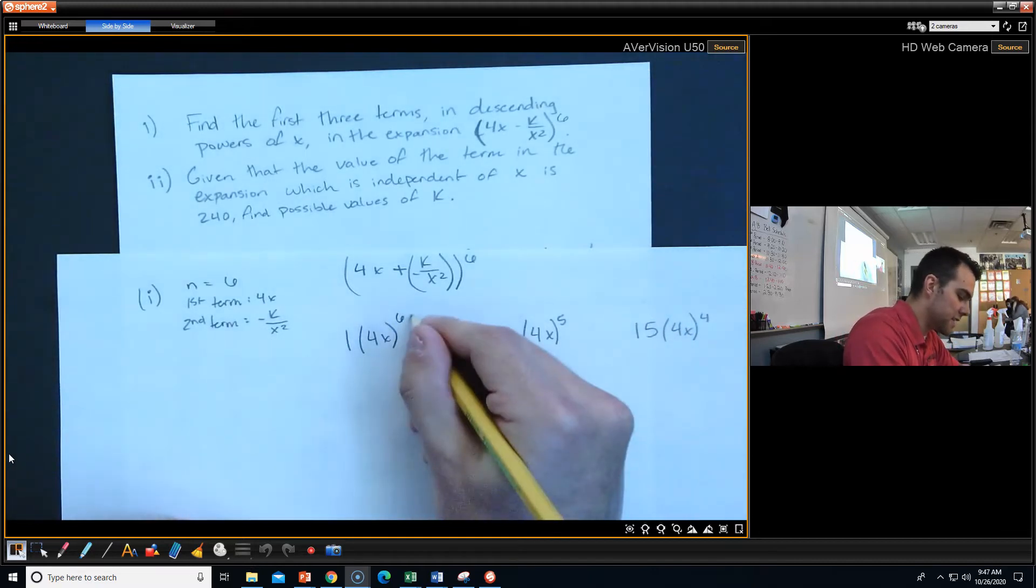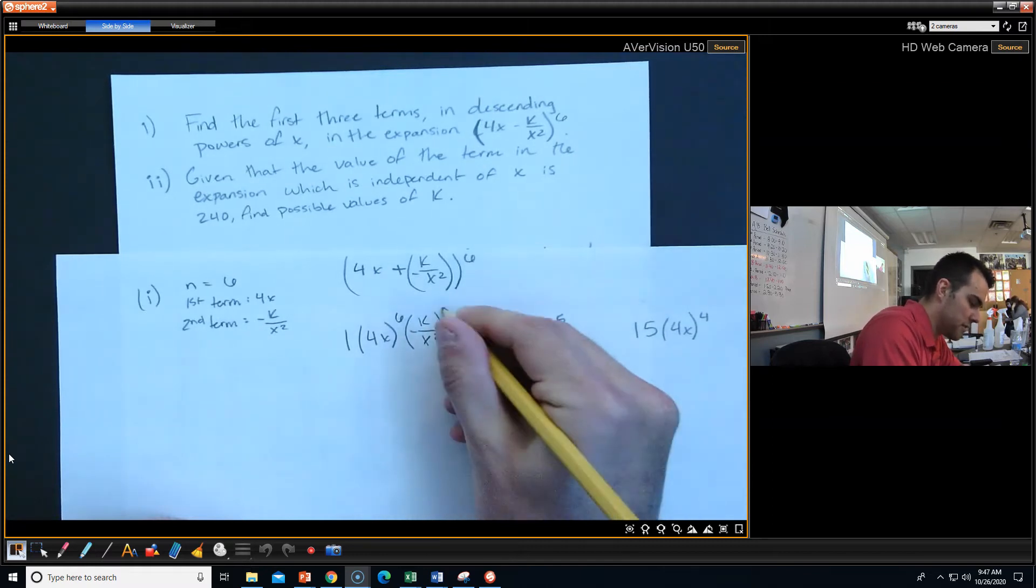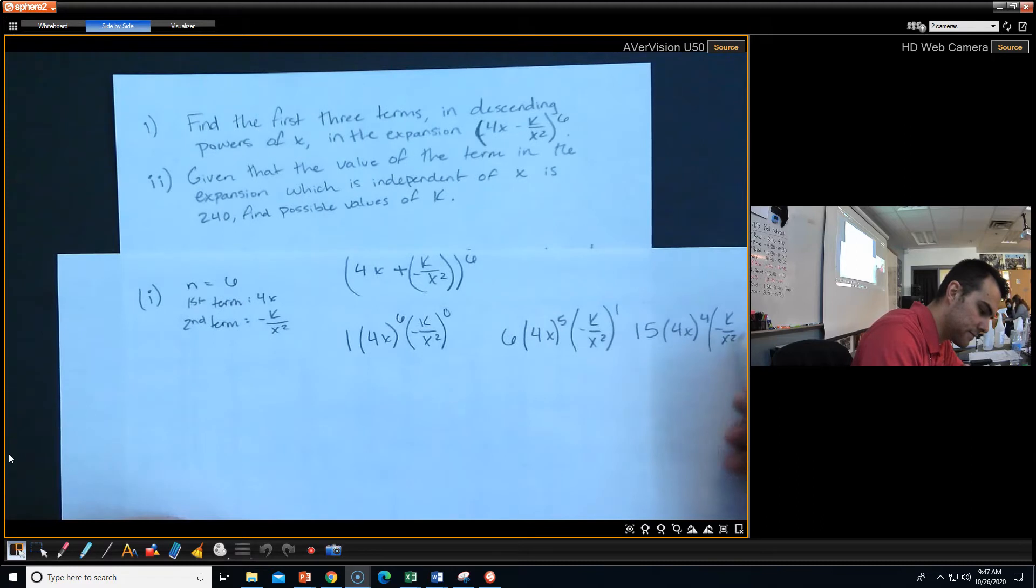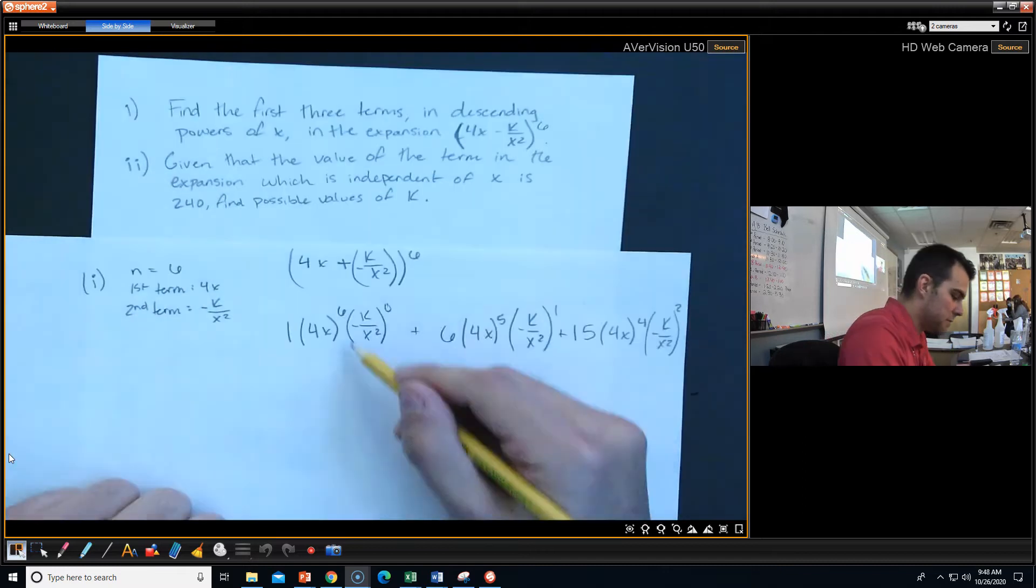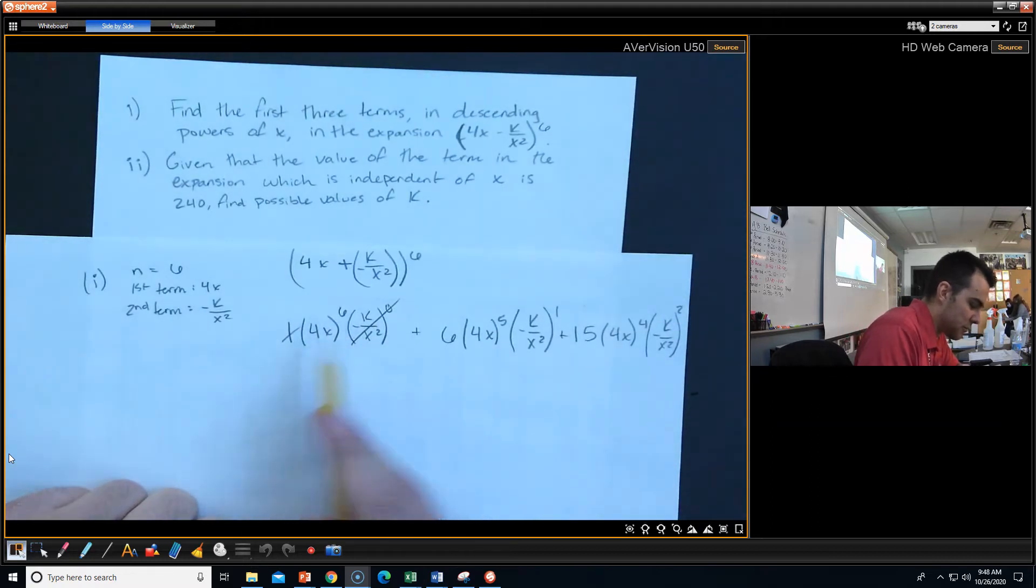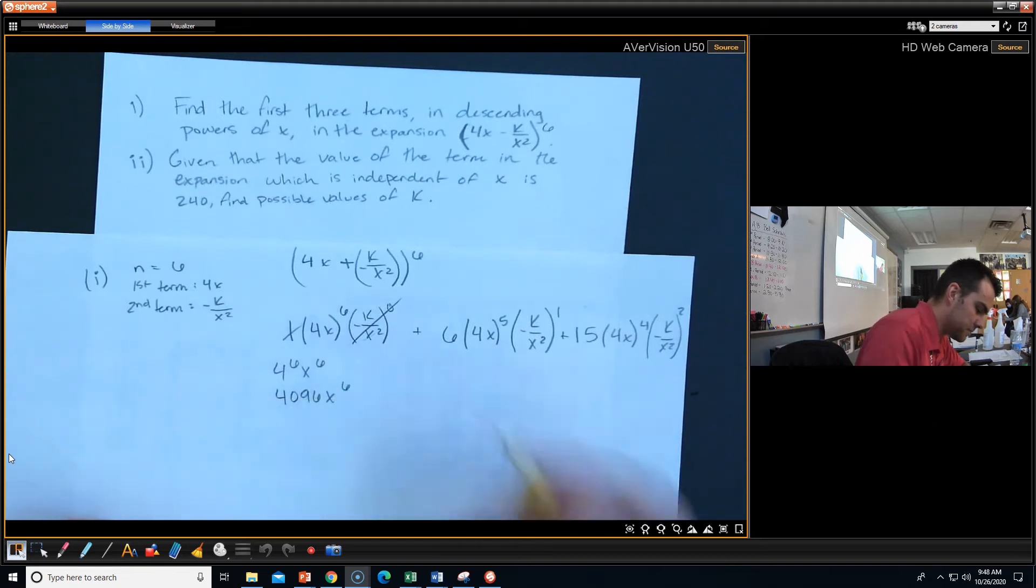So then we're going to look at our second term. This guy is the opposite, it's going to ascend starting at the 0 power. Now really the only thing we've got to do is just clean this stuff up. Let's cancel what we can cancel. So this is going to be 4 to the 6th, x to the 6th. So if we simplify that out a little bit more, we got 4 to the 6th is going to be 4,096 x to the 6th.